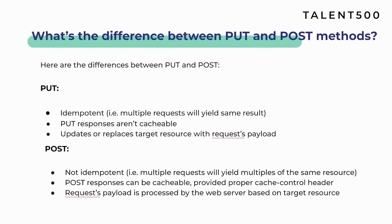Idempotent means that if you make multiple requests via PUT, it will give you the same result each time. Whereas making multiple requests via POST will give you multiple copies of the same resource. Second, PUT responses are not cacheable, whereas POST server responses are cacheable depending on whether proper cache-control headers are provided. Third, PUT updates or replaces the target resource with the request payload, whereas in POST the request payload is processed by the web server based on the target resource.